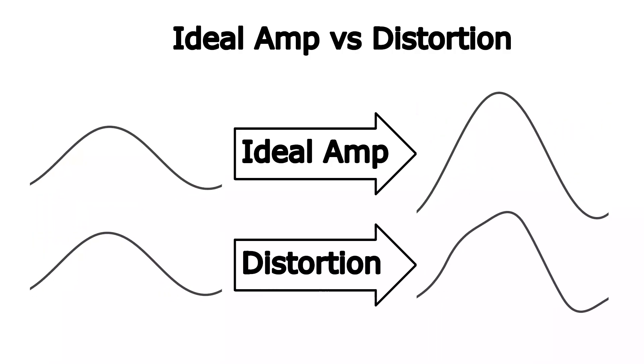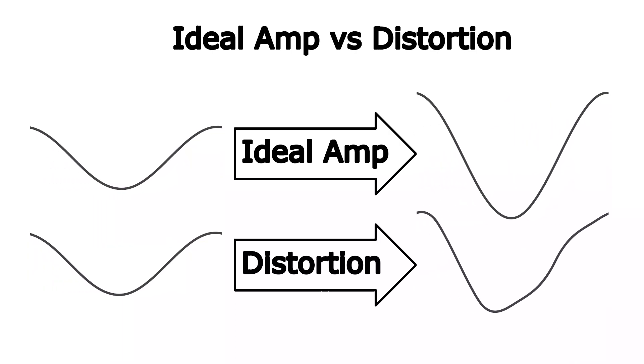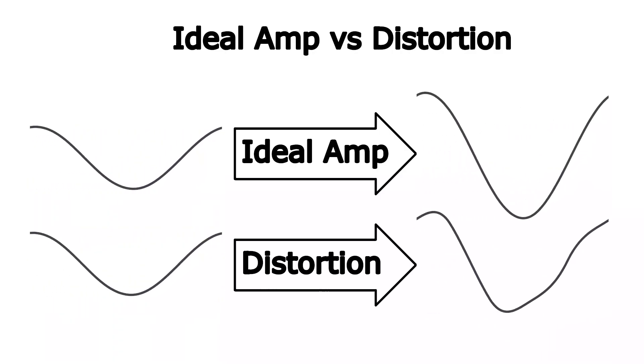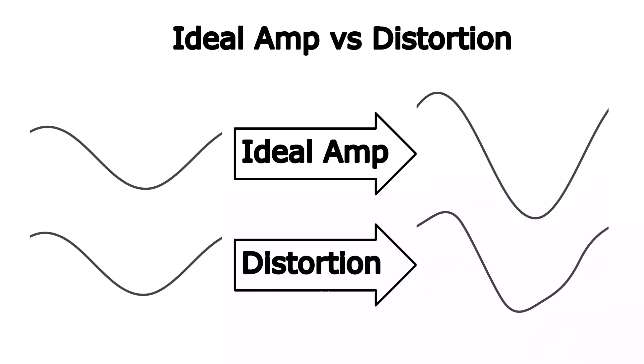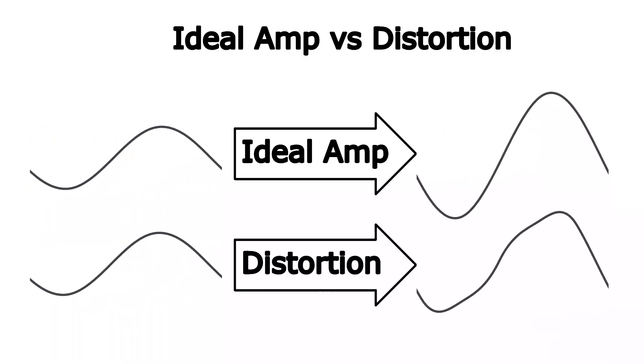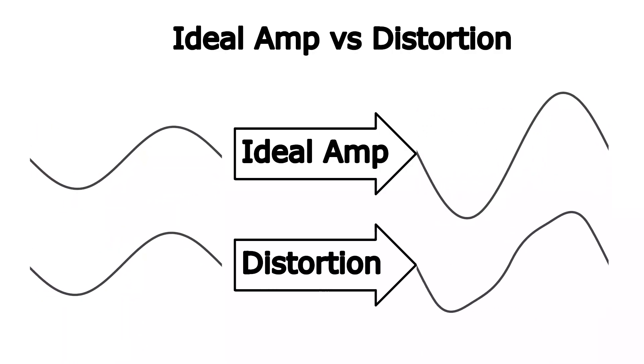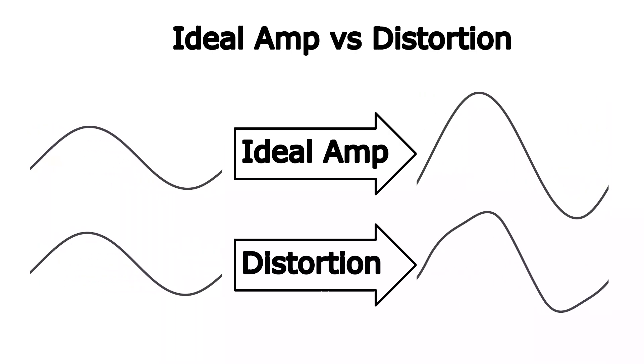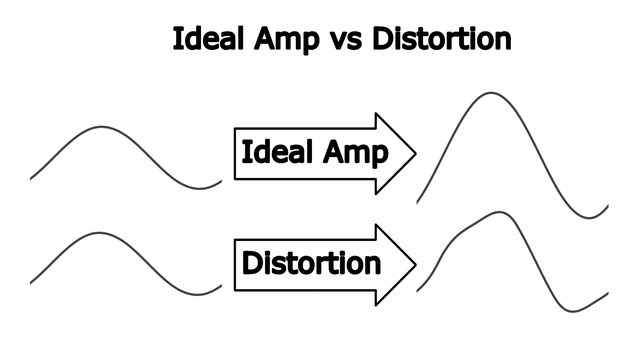What does a distortion overdrive pedal do to a guitar signal? When the signal from the guitar passes through the pedal, it's amplified, compressed and distorted. In an overdrive-like pedal the process is illustrated by the animation. In an ideal voltage amplifier the signal is only scaled in amplitude with the scaling characterized by a gain factor. However, the distortion overdrive pedal is not an ideal amplifier. This is because it operates in a non-linear way, which can lead to signal clipping and varying levels of gain across different frequencies, resulting in a distorted output signal.